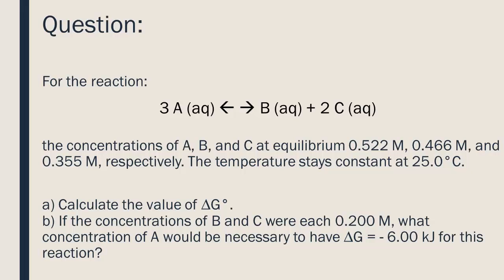Part A: Calculate the value of standard delta G. Part B: If the concentrations of B and C were each 0.200 molar, what concentration of A would be necessary to have a delta G of negative 6.00 kilojoules for this reaction?